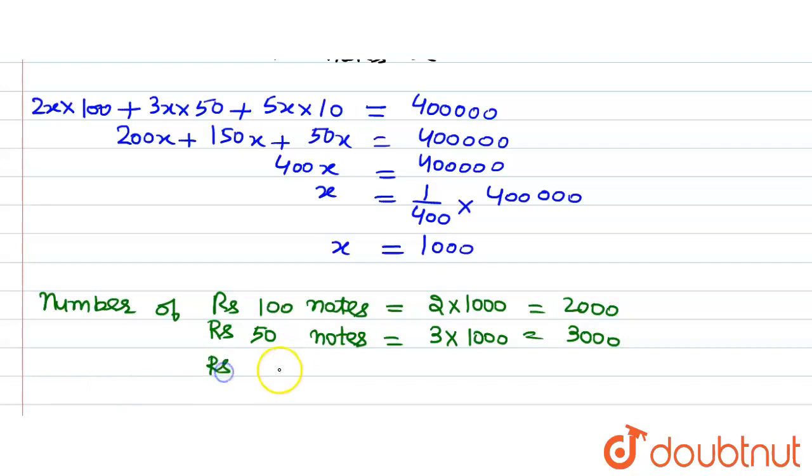Number of rupees 10 notes is equals to 5x which is 5 multiplied by x equals 1000, so this will be equal to 5000.